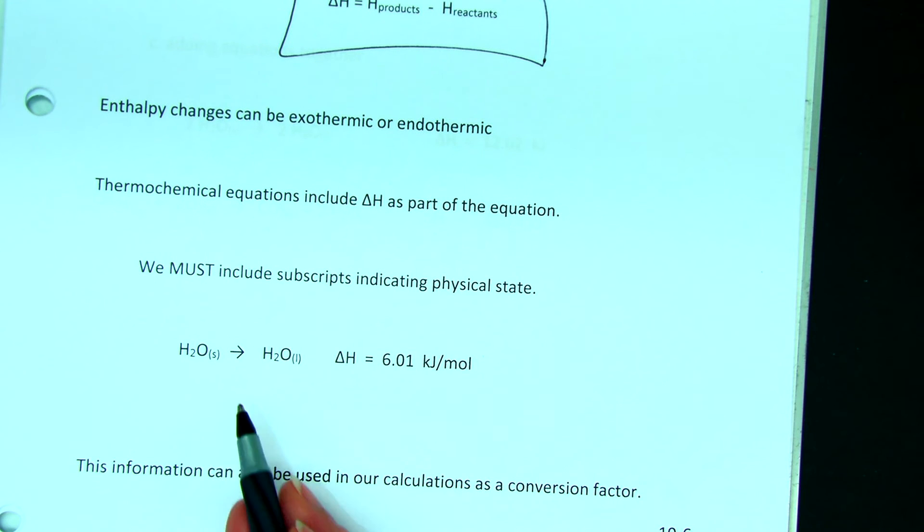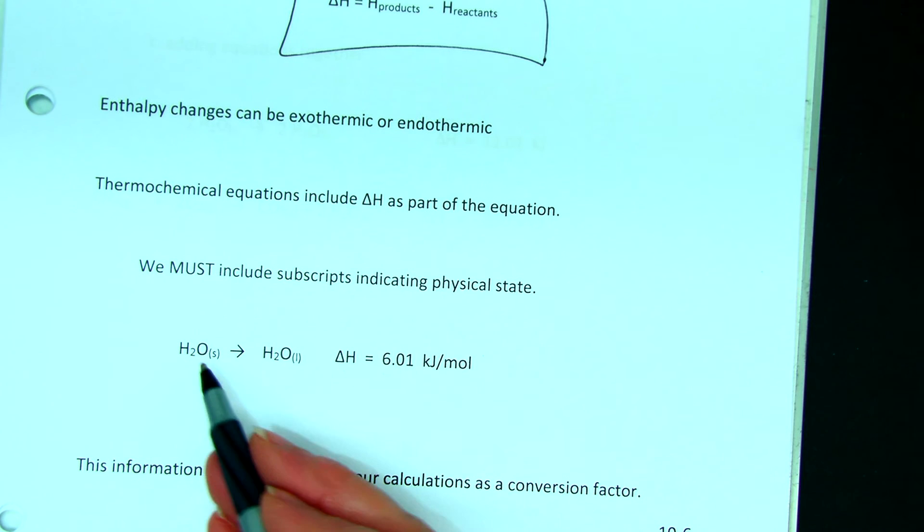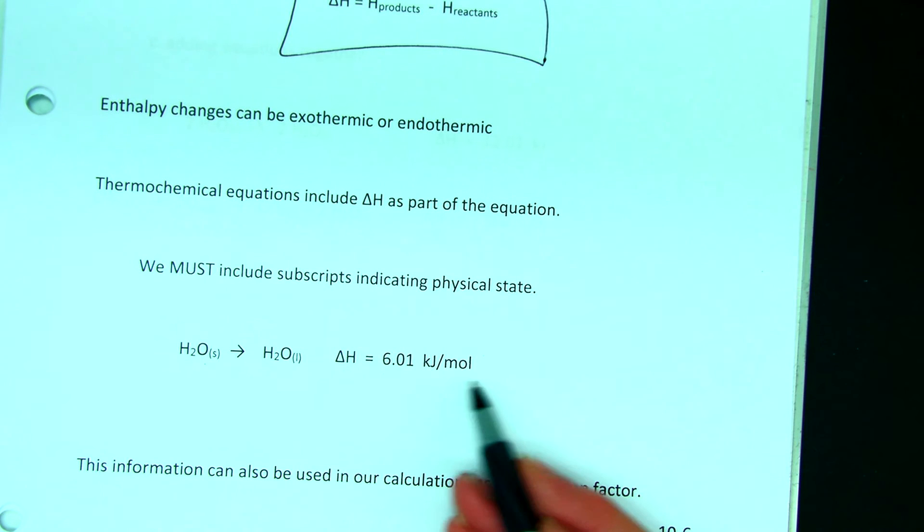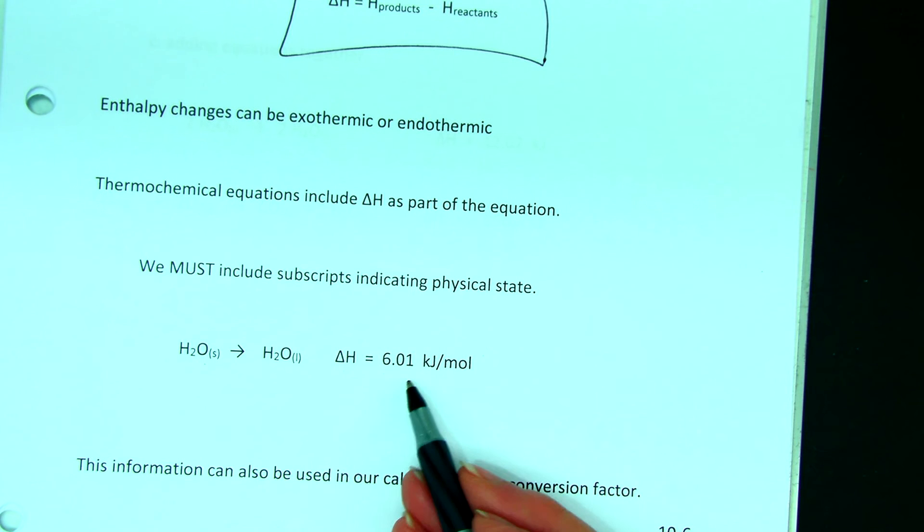So if we look at this, we have water solid, one mole, yields water liquid. This is melting water. And the enthalpy change is 6.01 kilojoules per mole. So we write thermochemical equations where we just write the delta H on the right-hand side. This becomes part of the equation. It's not a product. It's not a reactant. It's just written at the end of the equation, and it's information about that equation.